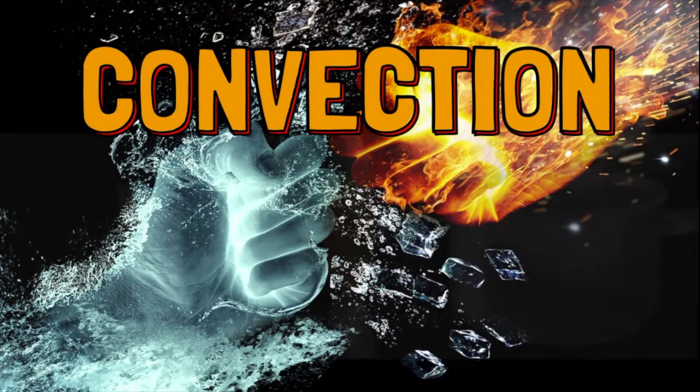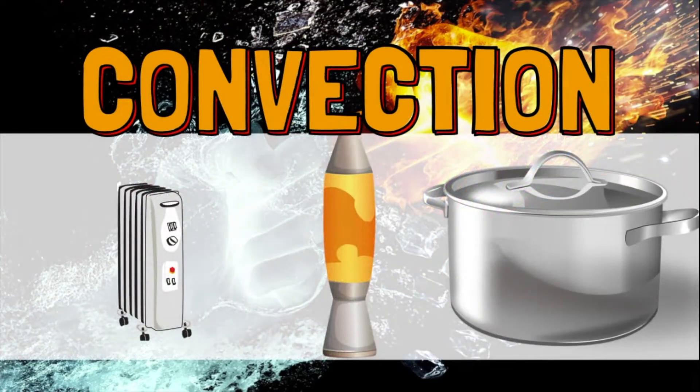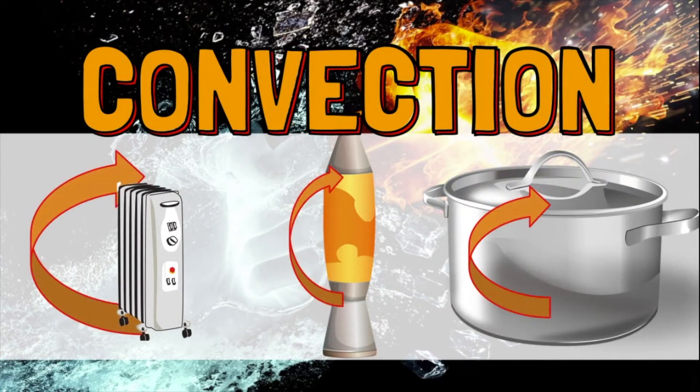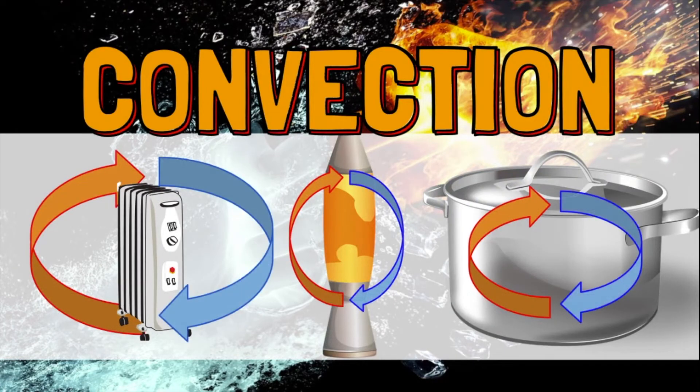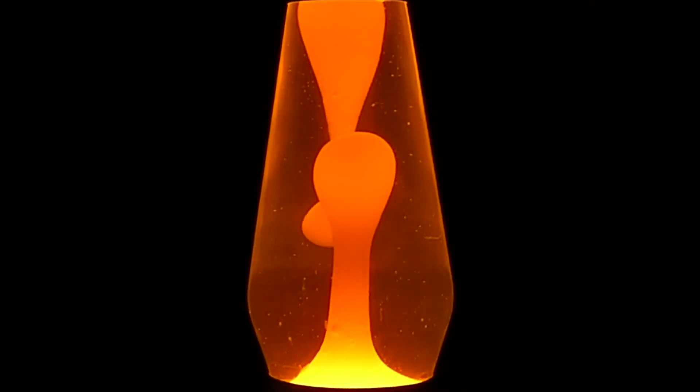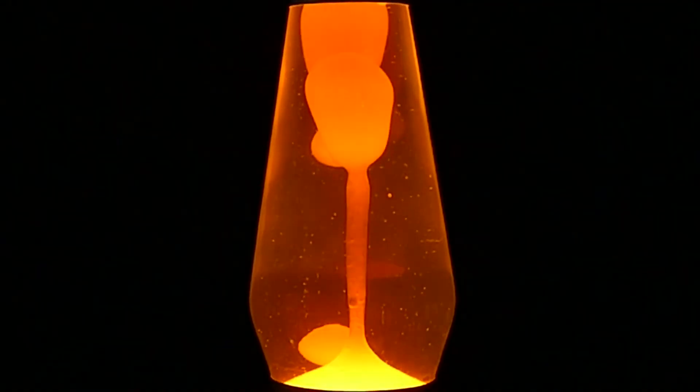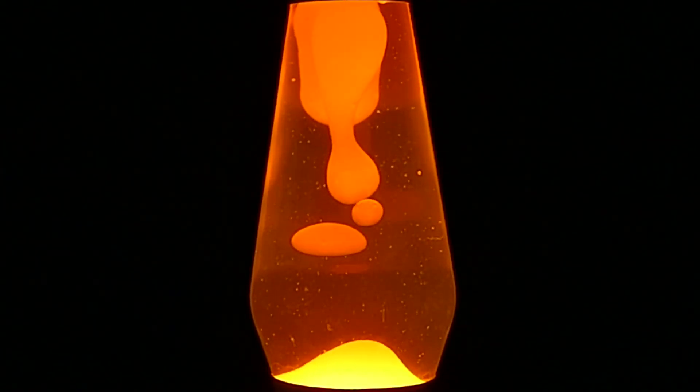This heat phenomenon is how convection currents work. Hot matter rises to the top where it cools and sinks back to the bottom to create a circular motion or current. A good example of a convection current is the up and down circular motion seen inside this lava lamp.